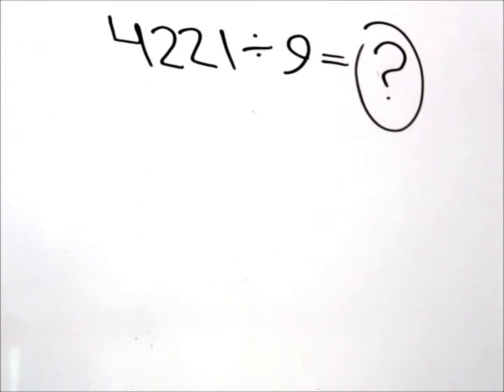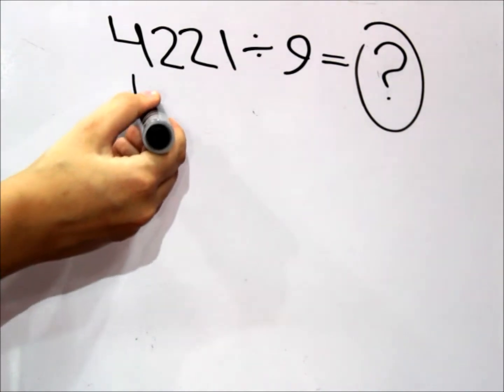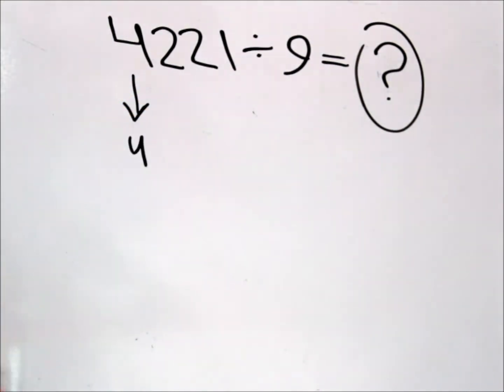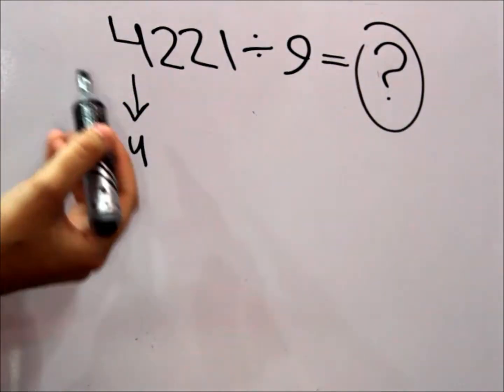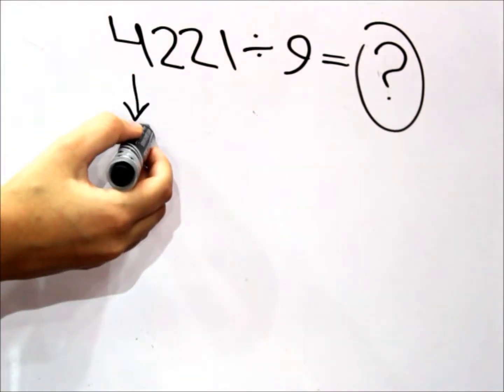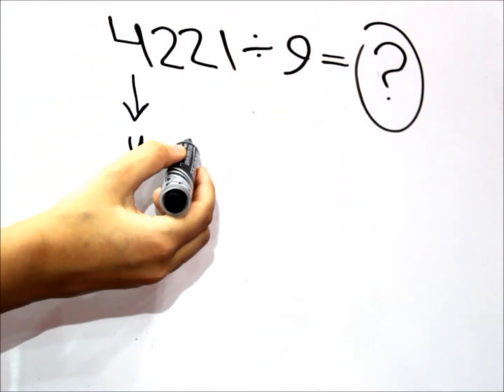We're going to take this example first. The first thing we're going to do is put down the 4. And then we're going to add up this 4 with the second digit in the number. So it's a 2. The 4 and the 2, it's a 6.